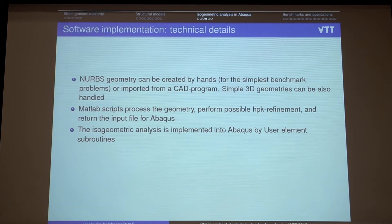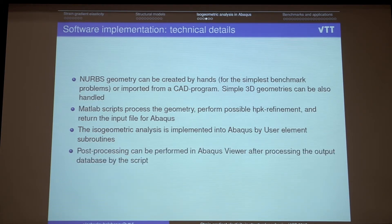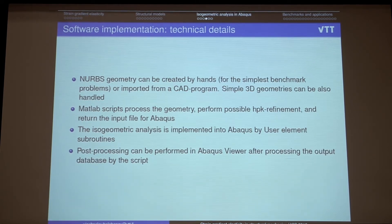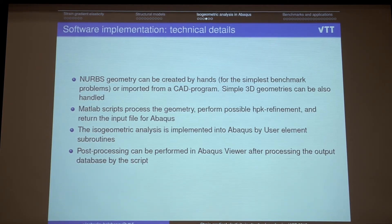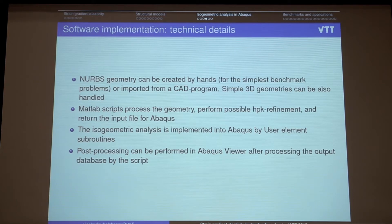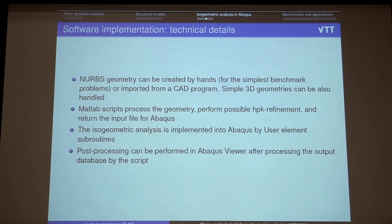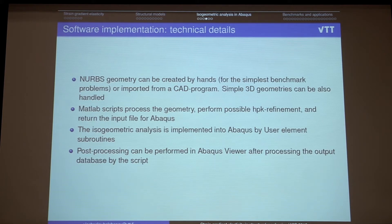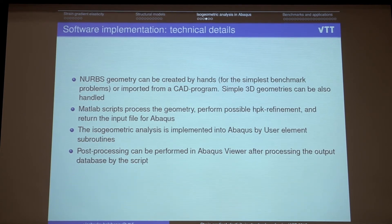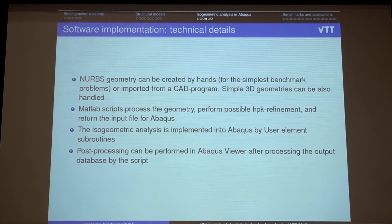And isogeometric analysis in Abacus is implemented by using a user element subroutines. And after the solution process, we can output the database to any external programs like Paraview. But we prefer to use Abacus Viewer. So for this we also wrote the post-processing script. Which creates good ODB output databases. Which is understandable by Abacus Viewer. So all the process can be done in Abacus now.